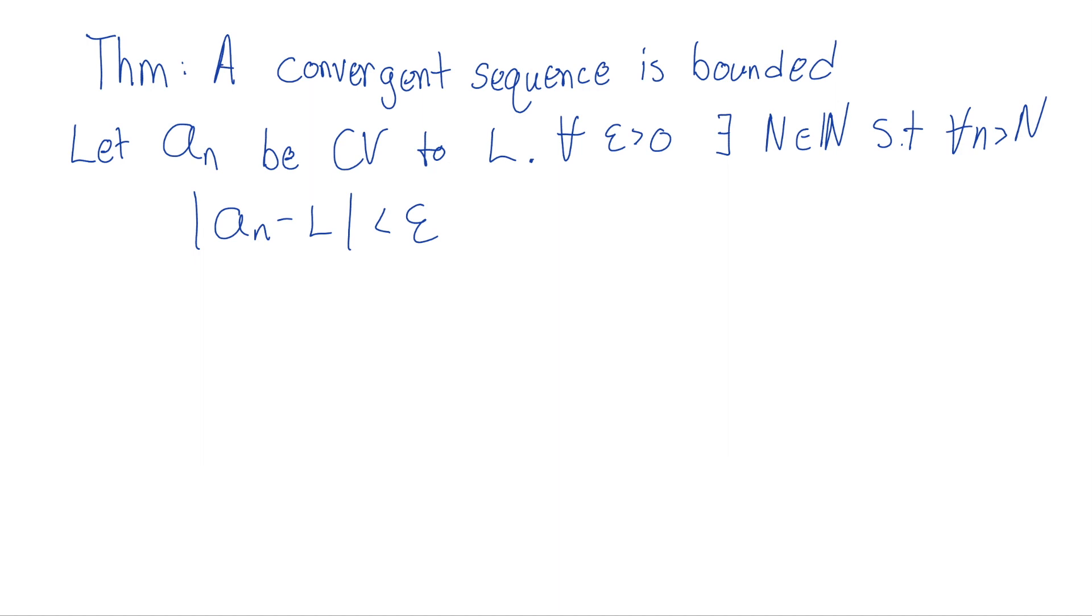And so this is true for any epsilon we want. For convenience sake, let's just let this epsilon be one. It's true for any epsilon, so in particular it's true for one. And so here's the trick. We're going to try to bound this. We're trying to bound a sub n.